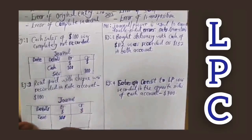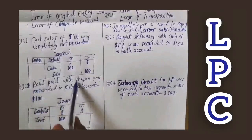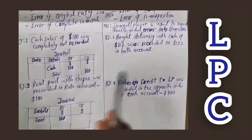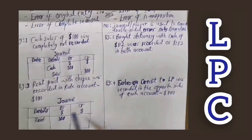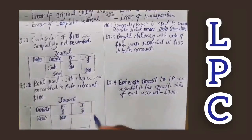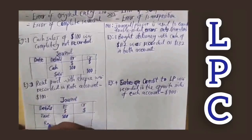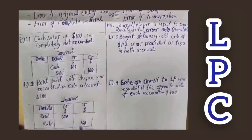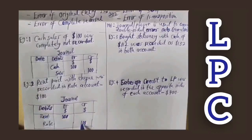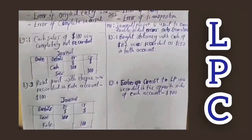Since the bank side was already recorded correctly, we only need to fix the rates account entry. The $100 was debited to rates by mistake, so we need to cancel that by crediting the rates account with $100. This credit will cancel off the incorrect debit in the rates account. That is how the correction is done for an error of commission.